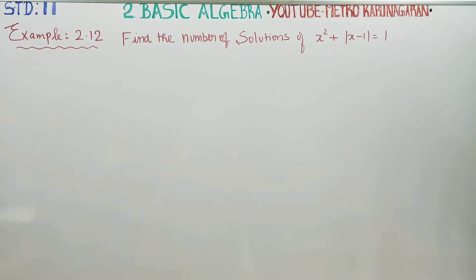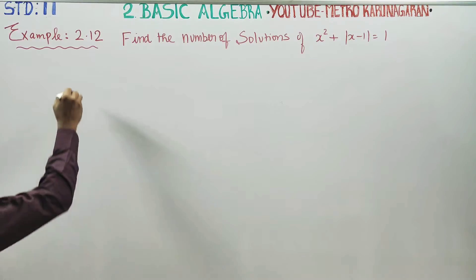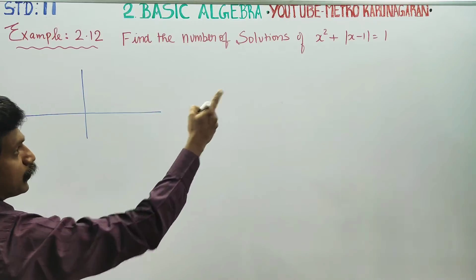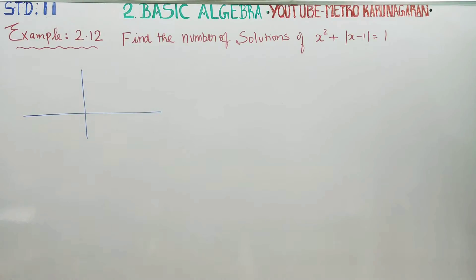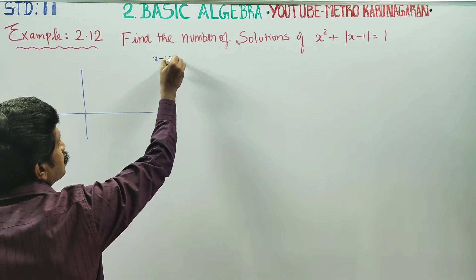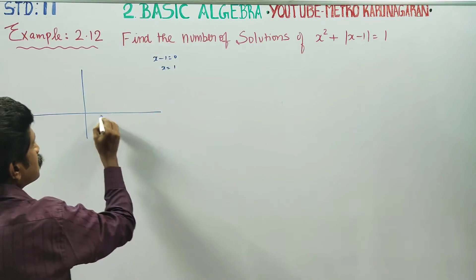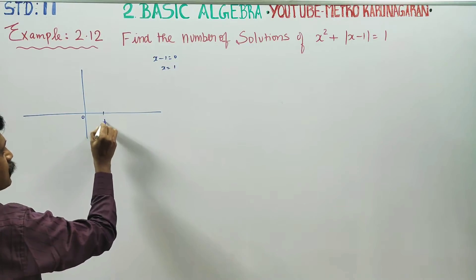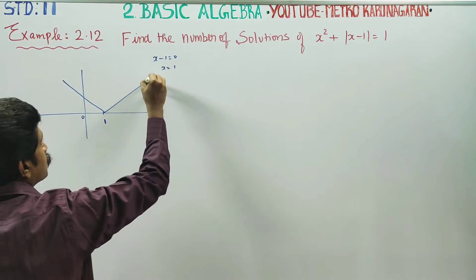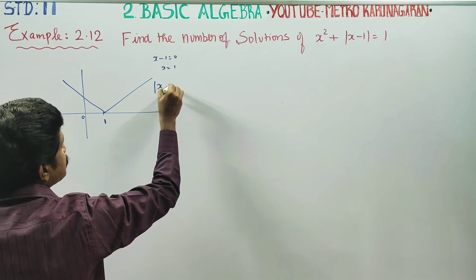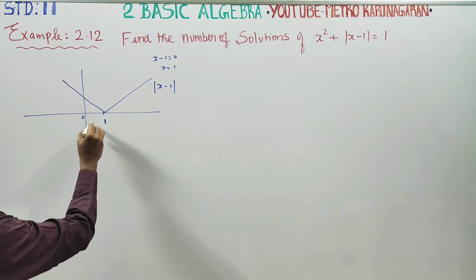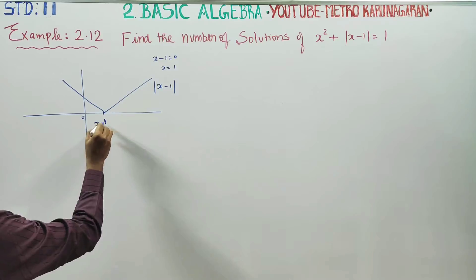Before entering into this equation, let's look at the graph of modulus of x-1. We find x-1 equals 0, so x equals 1. That is the vertex point at x equals 1. Here is the graph of modulus of x-1.